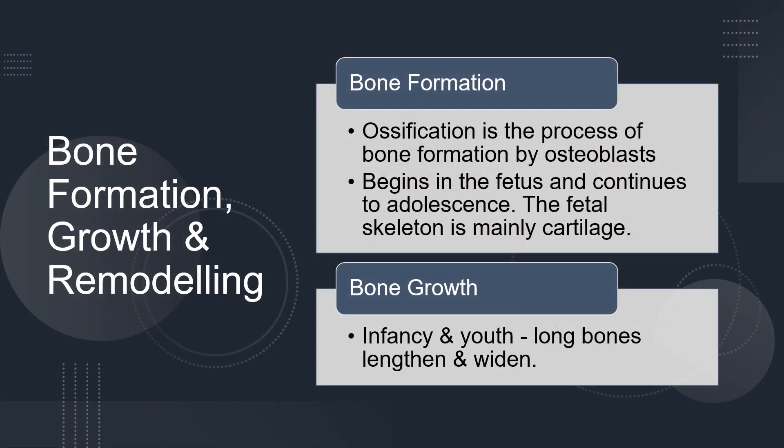Now, let's talk about bone formation, growth, and remodeling. Bone formation is a process called ossification, which is carried out by cells called osteoblasts. Ossification begins in the fetus and continues through adolescence. At birth, most of the skeleton is made up of cartilage, but over time the cartilage is replaced by bone tissue.